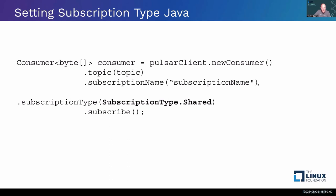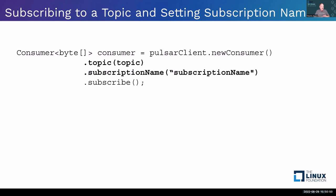When subscribing in Java, pick your subscription name and subscription type — this is how you decide between messaging and streaming. With a shared subscription, you're doing messaging: you and 50 friends all get messages and process as a team, whoever grabs one first does it. If you want in-order or Kafka-style streaming, pick a different subscription type like exclusive. Change that one parameter and the data processing behavior changes completely.